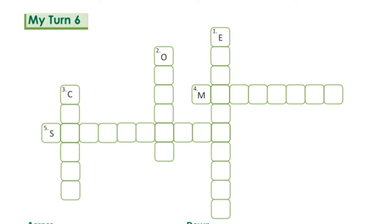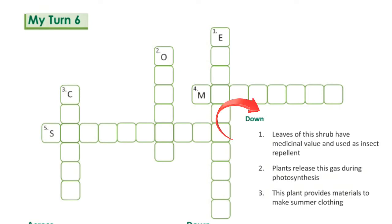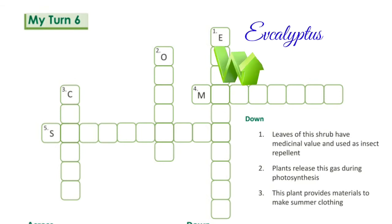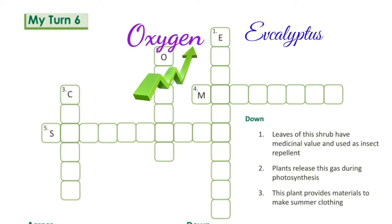Now, My Turn 6th. Down. First, leaves of this shrub have medicinal value and are used as an insect repellent. The answer is eucalyptus. Second, plants release this gas during photosynthesis. The answer is oxygen.